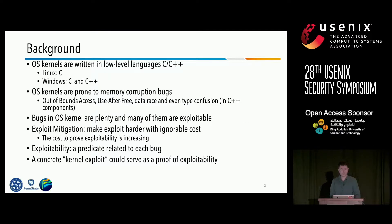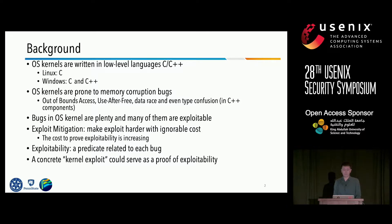OS kernels are written in low-level languages like C and C++. Large programs written in low-level languages inevitably have bugs, such as OOB access, UAF, data race, and even type confusion vulnerabilities. Thousands of kernel bugs are reported each year, and some of the bugs are very dangerous because they are exploitable.